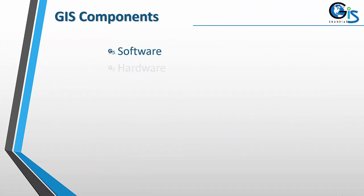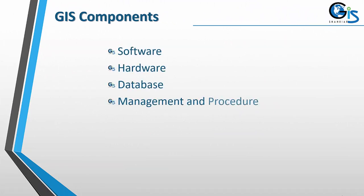Now let's see GIS components. These are the components of GIS: software, hardware, database, management and procedure, and people and network.